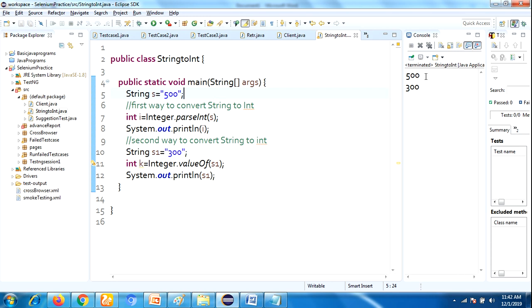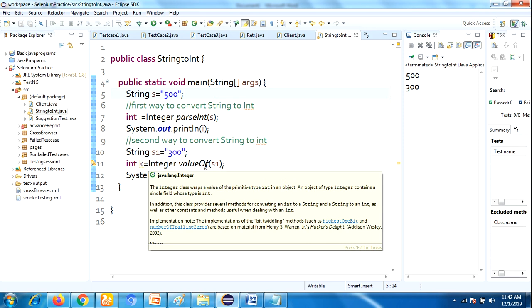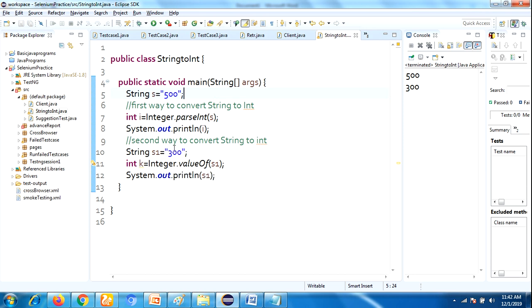The second way to convert the string into int is valueOf method. valueOf method is also used to convert string into int. The procedure is same: Integer.valueOf(s1), so output will be in integer format.